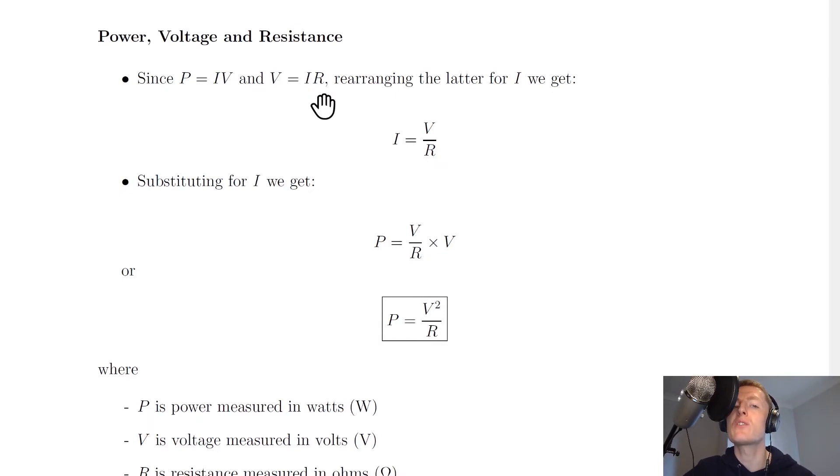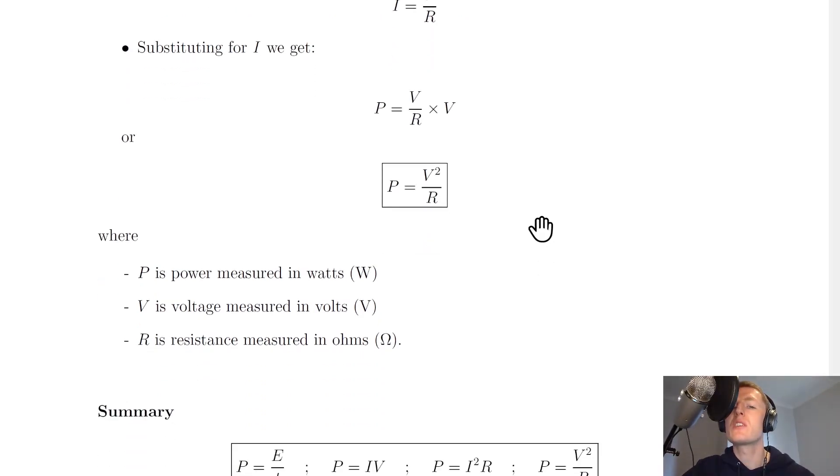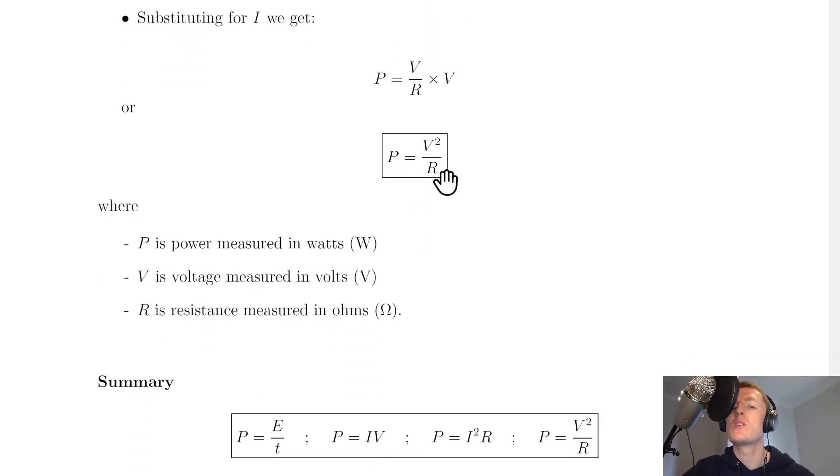we can rearrange the latter, V equals IR, for I. If we do that, we get I equals V over R. Now if we substitute this I into P equals IV, then we get P equals V over R times V, but notice that we now have V times V, which gives us V squared. So this gives us a new equation, P equals V² over R,